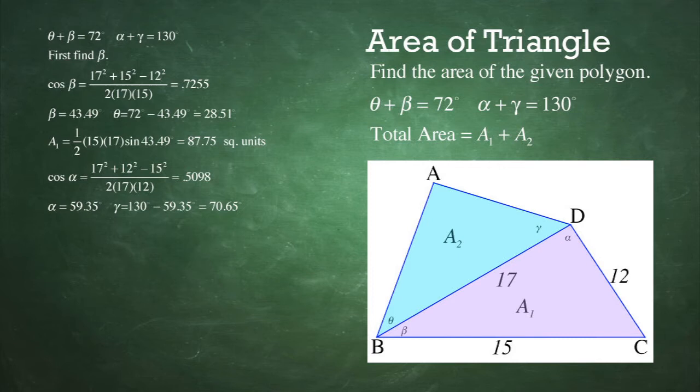Now, we find angle alpha. Again, to find angle alpha, we use the law of cosines in triangle BCD. And angle alpha works out to be 70.65 degrees. Now, once we have found angle alpha, we can find angle gamma, because alpha plus gamma equals 130.